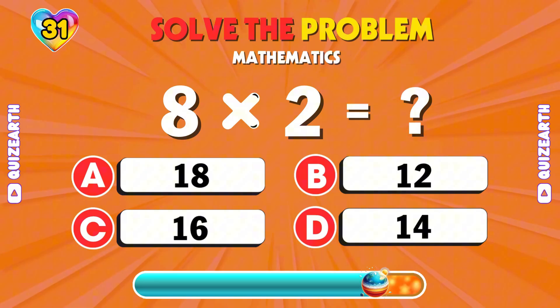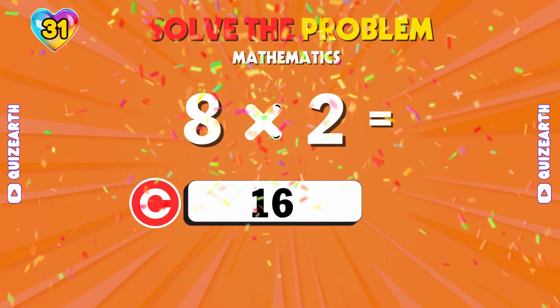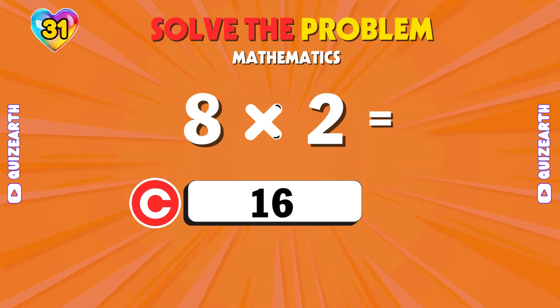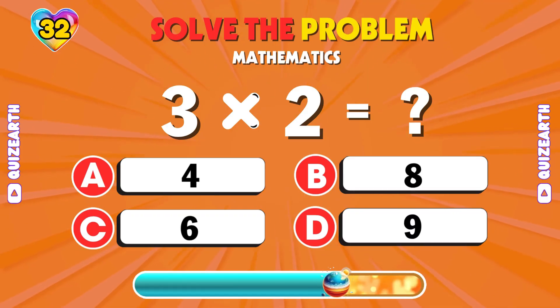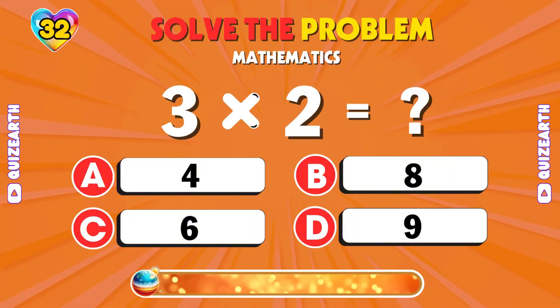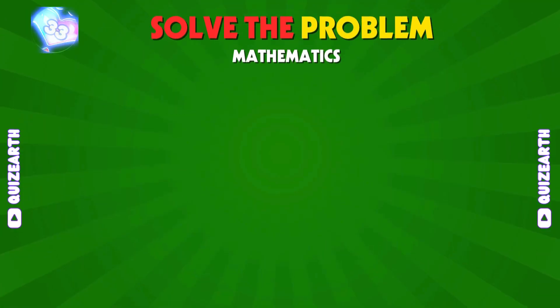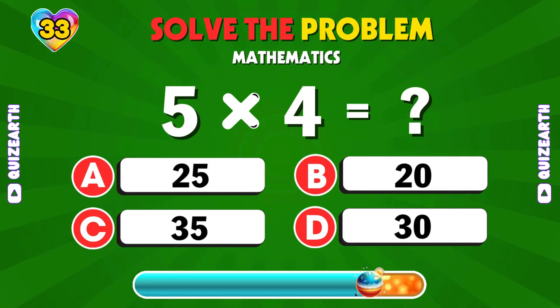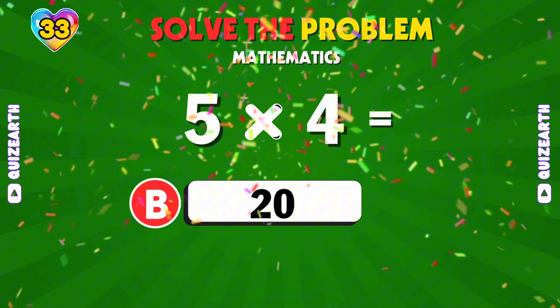Let's do, 8 times 2. Answer, 16. Coming up, 3 times 2. 6. Classic one, 5 times 4. Final call, 20.